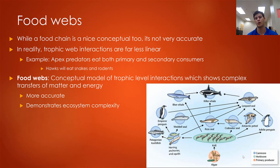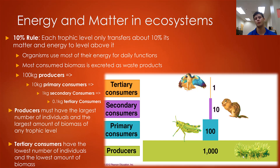A marine food web, for example, starts with algae as the primary producers and works all the way up to killer whales and blue whales at the very top. Food webs display a lot of ecosystem complexity and show how many moving parts ecosystems have. Each trophic level only transfers about 10% of its matter and energy into the level above it — a lot of this matter and energy gets used and spent. This rule that only 10% makes it to the next level is known as the 10% rule.